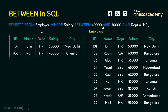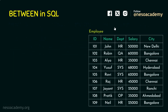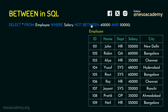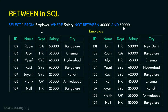The output satisfies both conditions: salary between 40000 and 50000, and department equal to HR. We've already seen the negating command — NOT BETWEEN 40000 AND 50000 — and the result will include values not in that range. That's why we can see values like 68000 and 62000 appearing in the NOT BETWEEN output result set.